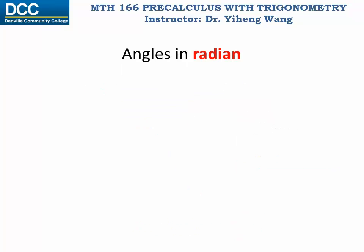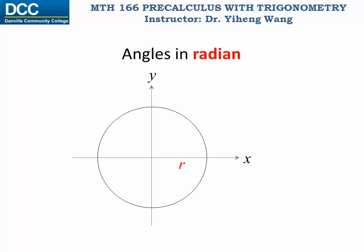You should be very familiar with angles measured in degrees — for example, an angle of 30 degrees or 60 degrees, etc. Now we're going to introduce a new way to measure angles: in radians. To define angles in radians, let's first draw our x-y coordinate system, and on this system let's draw a circle with a radius of r, centered at the origin.